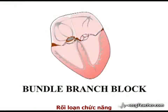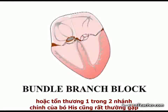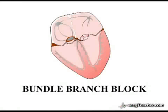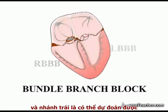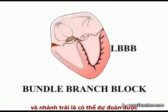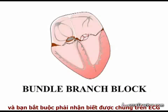Isolated dysfunction or damage of either of the main branches of the bundle of His is commonly observed. The pattern of ECG changes associated with right or left bundle branch block are broadly predictable and you must be able to recognise them on the ECG.